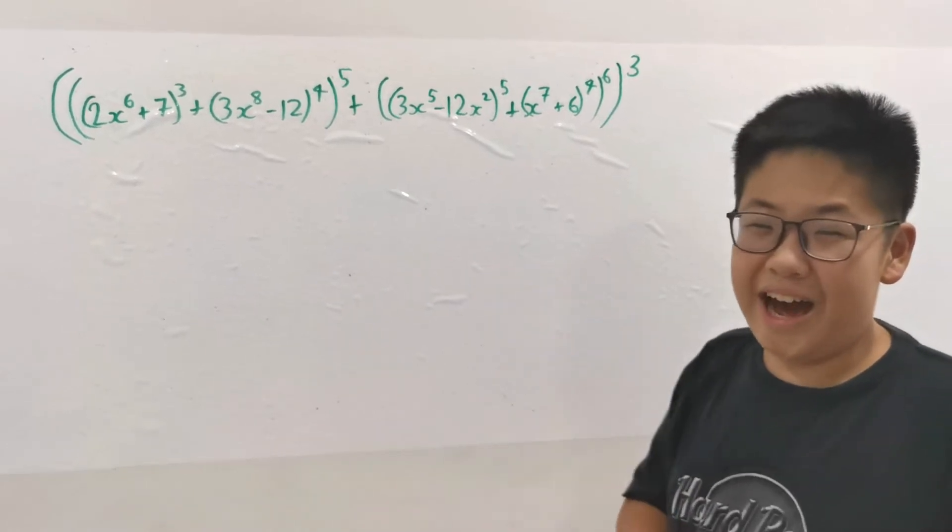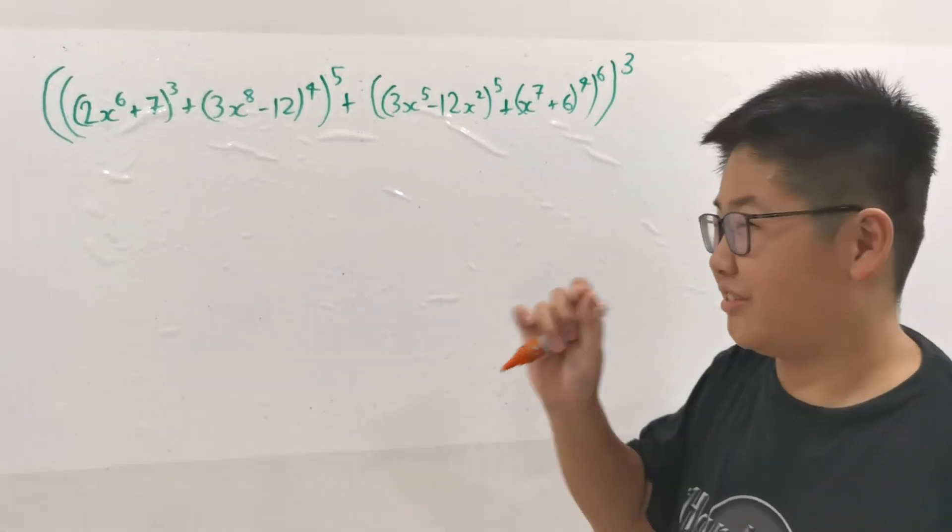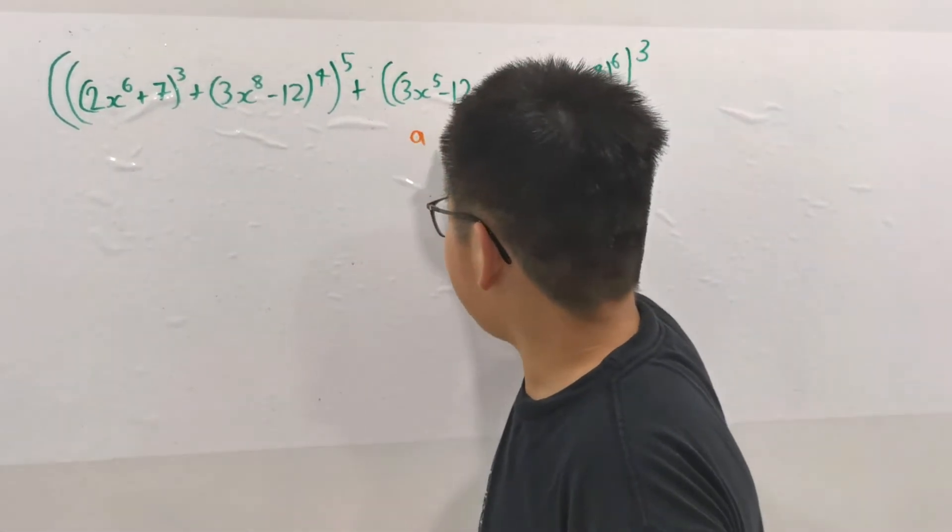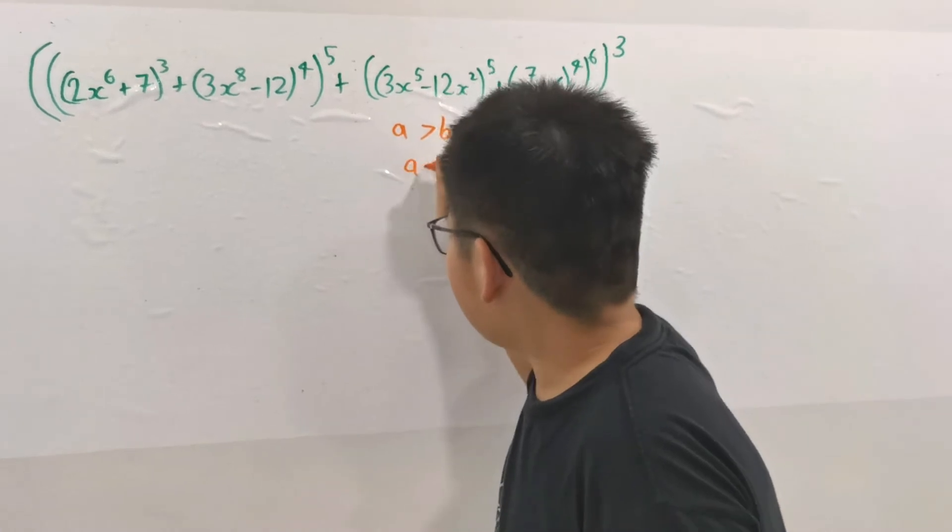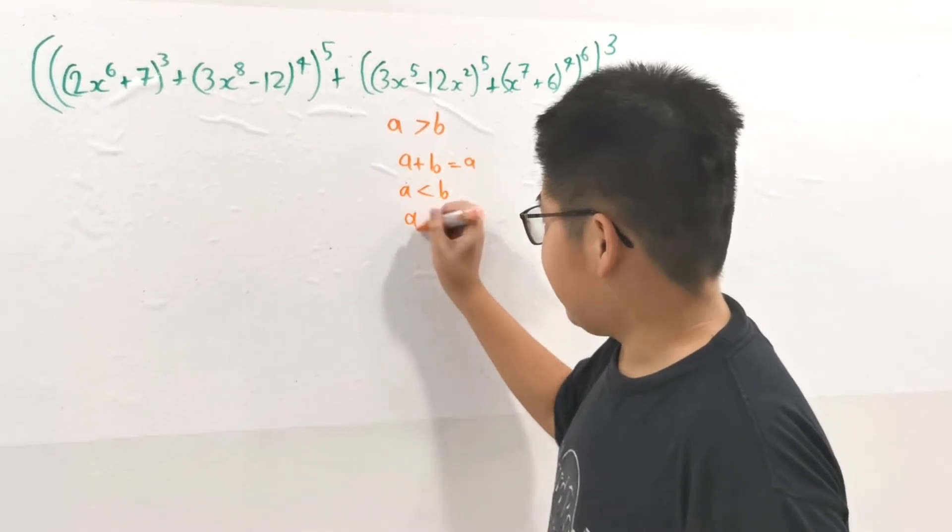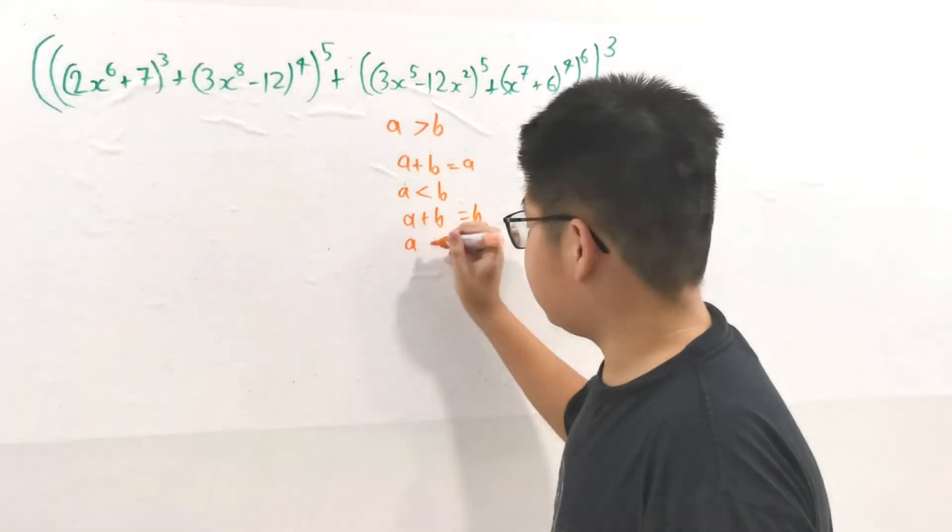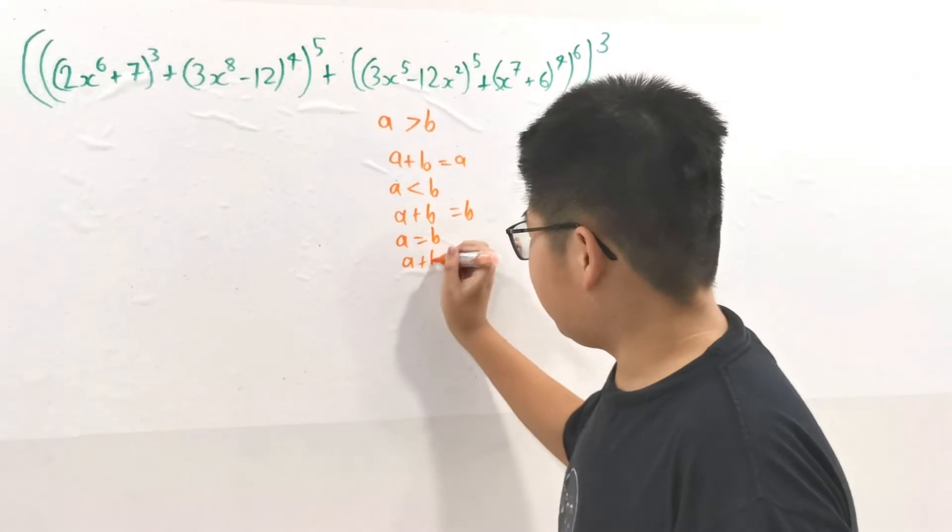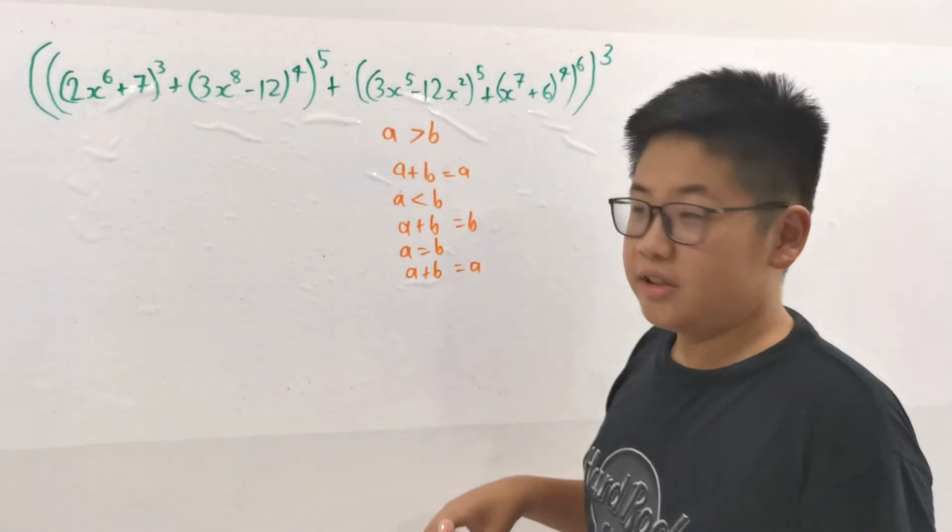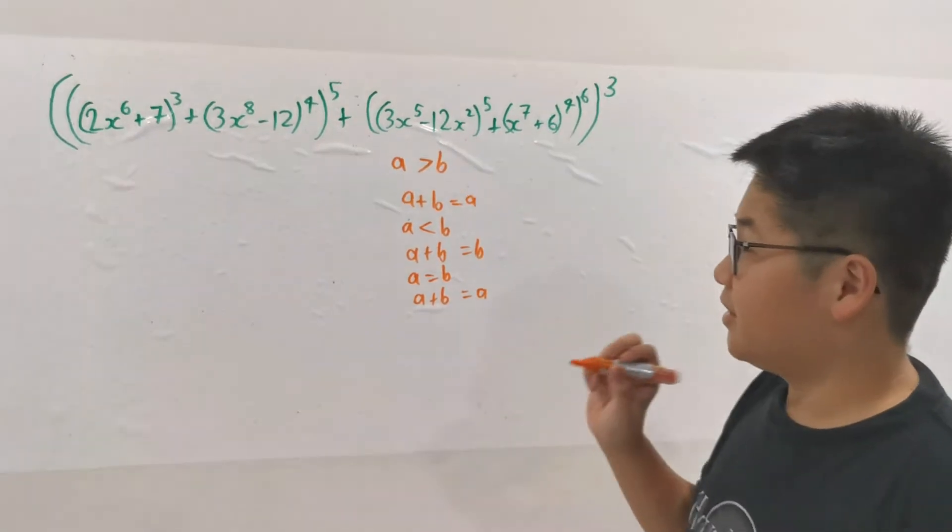So let us, since we're tired and have no time, invent a shortcut called degree arithmetic. Let's invent the following axioms: If a is greater than b, then a plus b equals a. Strange, huh? That means if a is less than b, then a plus b equals b. It's basically some kind of comparator where we take the larger value.